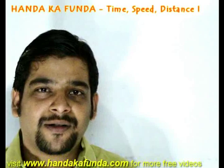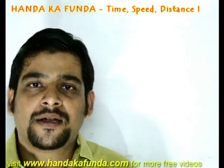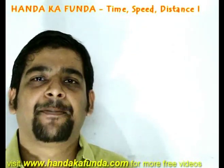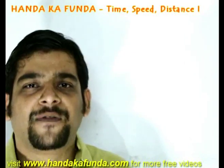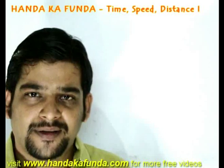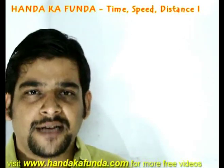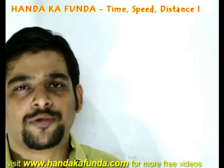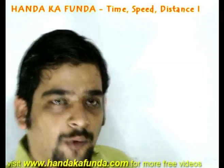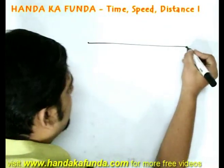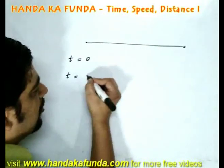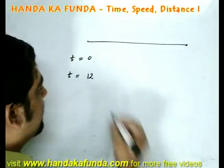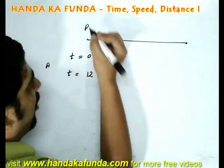Let us take an example on this proportionality funda. Suppose a person fires two bullets at a gap of 12 minutes. His friend B hears them at a gap of 11 and a half minutes. What I am trying to say is, suppose here, A fires two bullets at T=0 and at T=12 at point B.